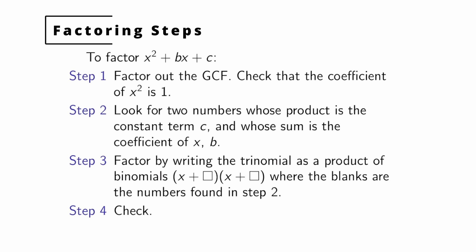But if you can find those two numbers, then you're going to write the trinomial as a product of binomials: (x + blank)(x + blank), where those two blanks are the two numbers you found in step two. And then finally you can multiply this out and check your work. Basically multiply this out and see if you end up back where you started.